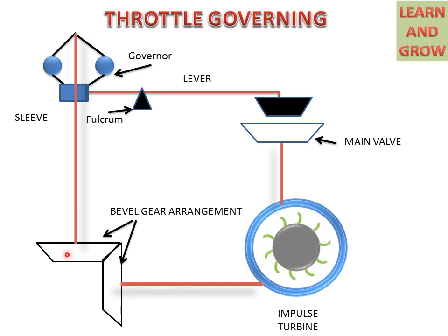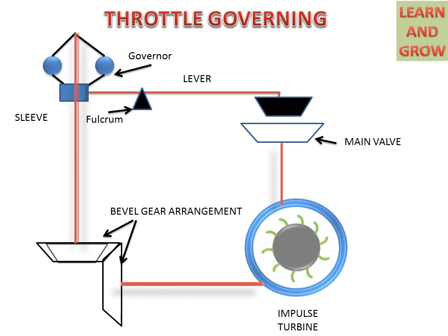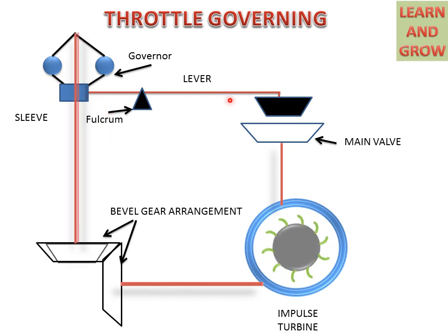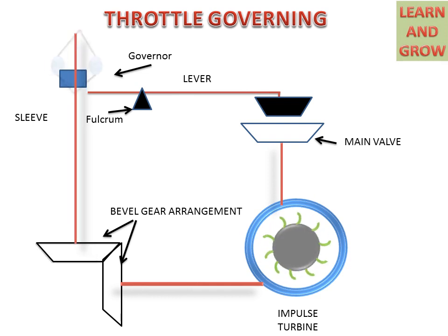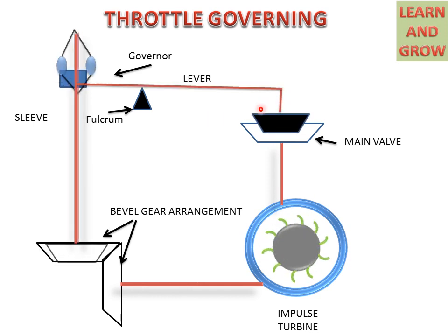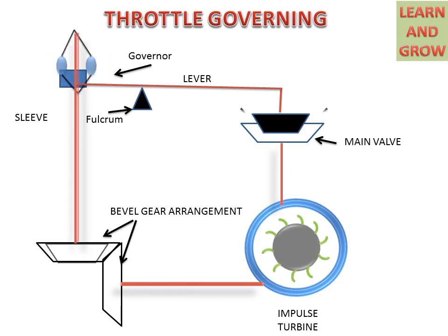This gear arrangement is connected to the governor. By the rotation of the rotor, the governor will also start rotating at higher speed. At higher speed, the governor fly balls will go in the upward direction and the sleeve will also go upward, pushing the valve in the downward direction to restrict the flow. So this valve restricts the flow of water to the turbine, and in this way Throttle Governing maintains the flow of water.